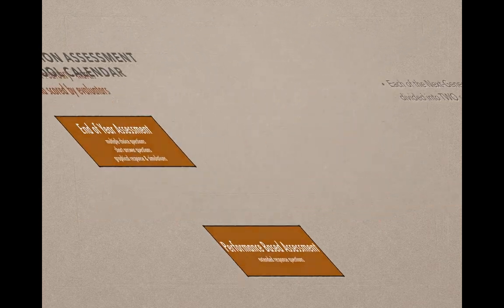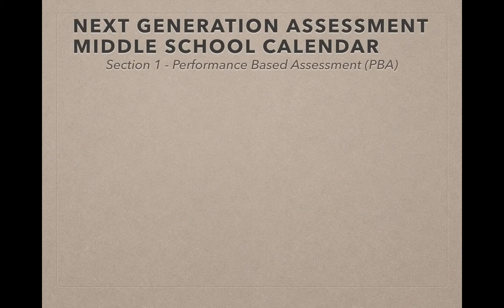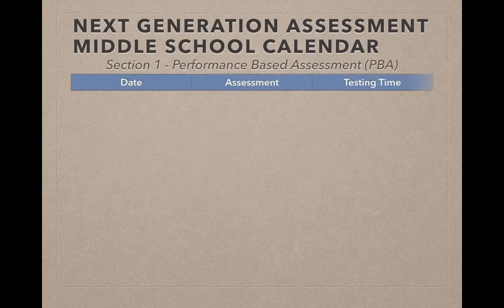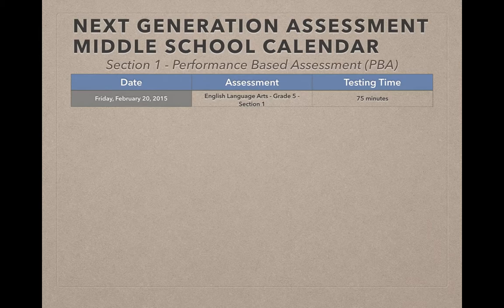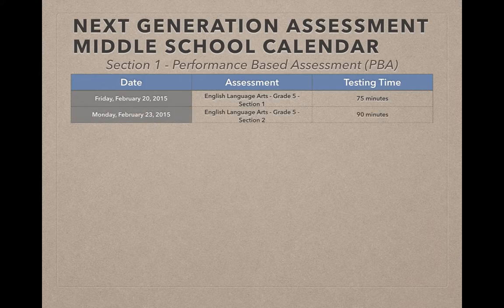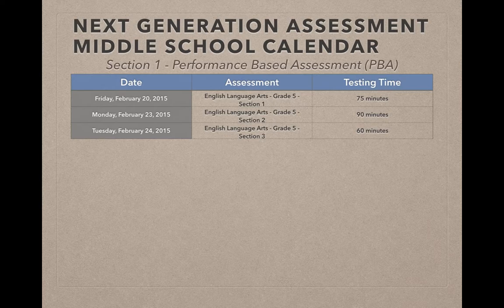I'd like to walk you through the calendar for our middle school performance-based assessments, which will be 75% of the way through the school year. We're going to start testing on Friday, February 20th, 2015. English Language Arts Grade 5 Section 1 will start Monday, February 23rd, Grade 5 Section 2. And Tuesday, February 24th will be English Language Arts Grade 5, Section 3. The testing time listed is the time allotted to each student.